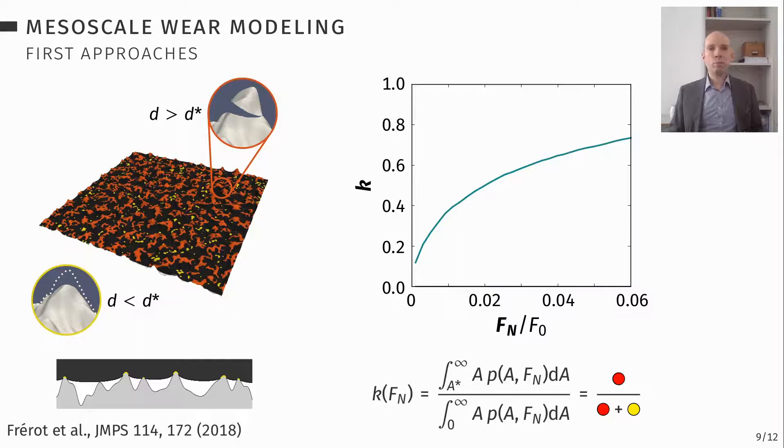Unfortunately, you can see from this graph that the k is not constant in a load range, which would be the expectation from experiment. And also it's going asymptotically towards one, which is way too high. So k should be below 0.1, maybe even less.